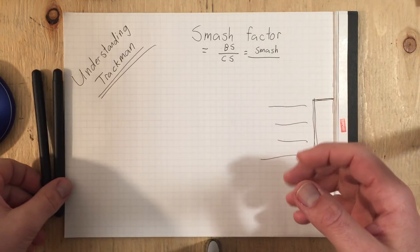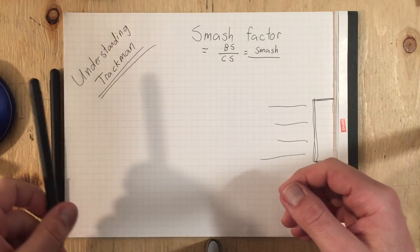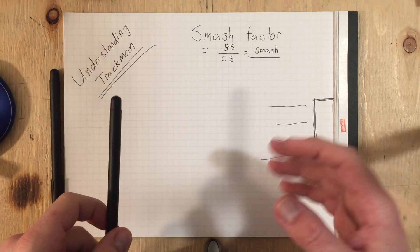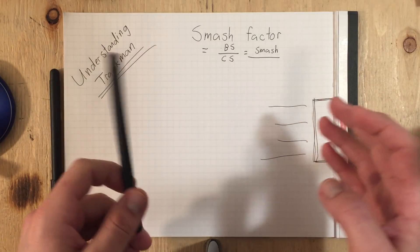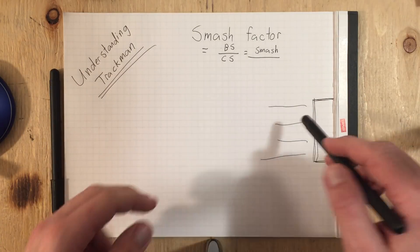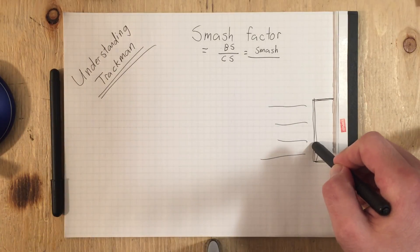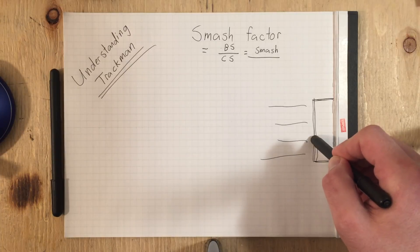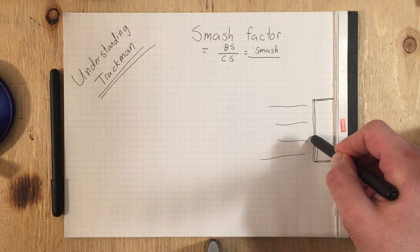There's a lot of misunderstanding right now because some people are saying numbers are high, some people are saying numbers are low, and it's because of the way TrackMan works that gives us these readings.